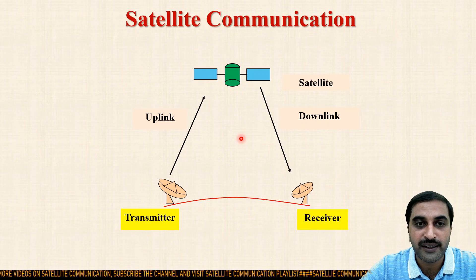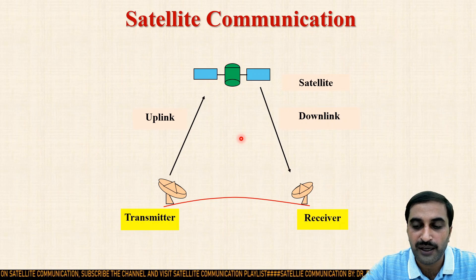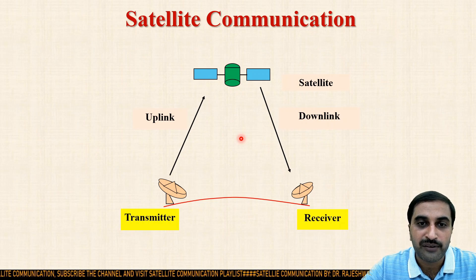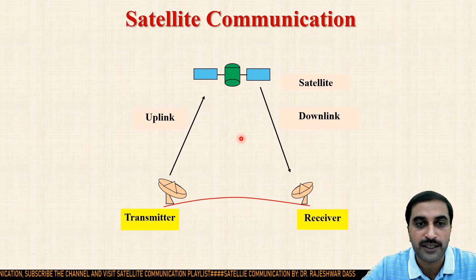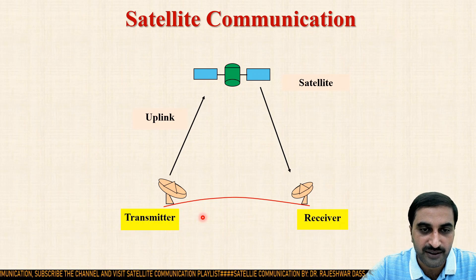For example, C band uses a 6 by 4 gigahertz frequency band, K band uses 14 by 12 gigahertz, and in Ka band a 30 by 20 gigahertz band is utilized.